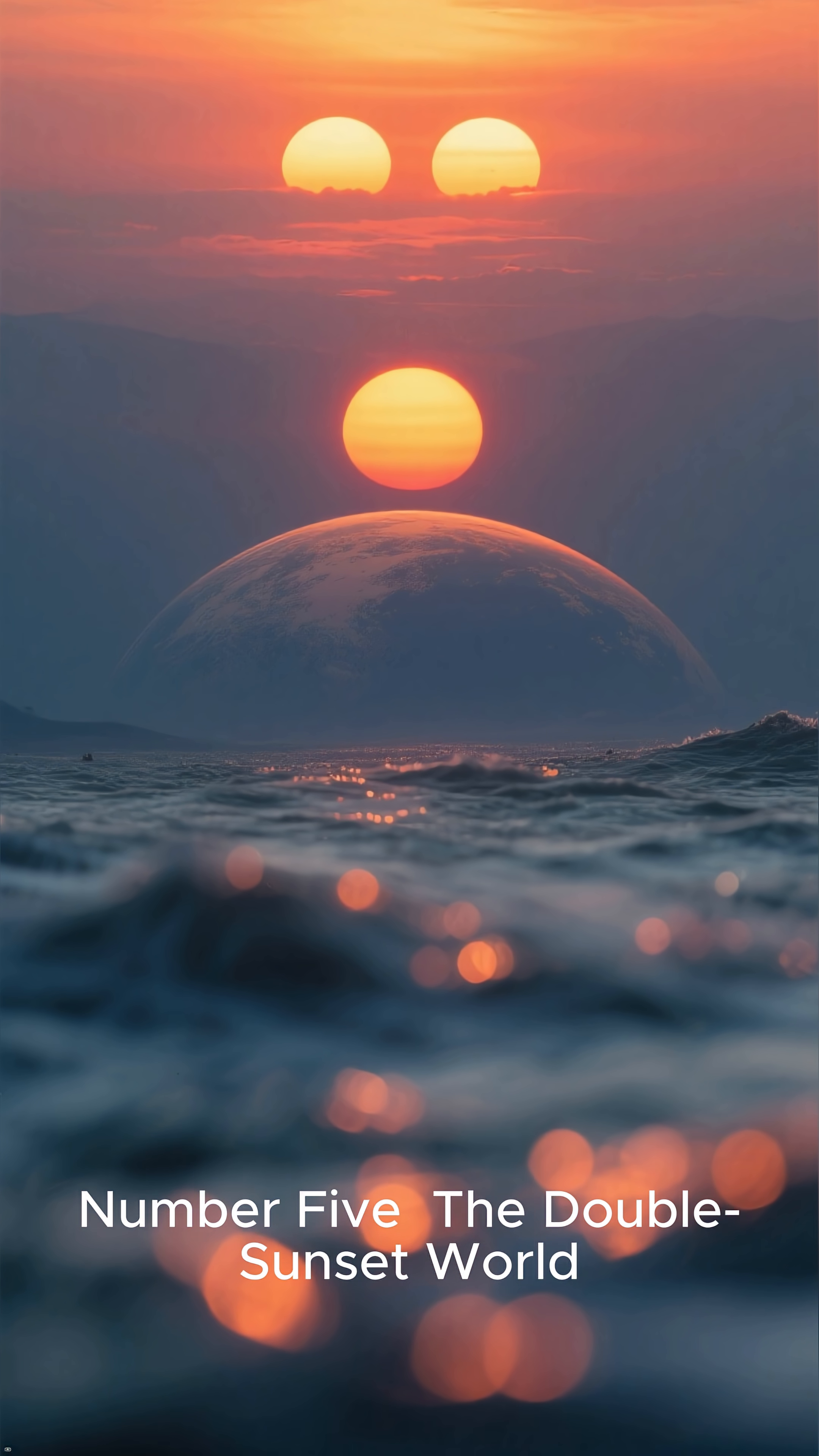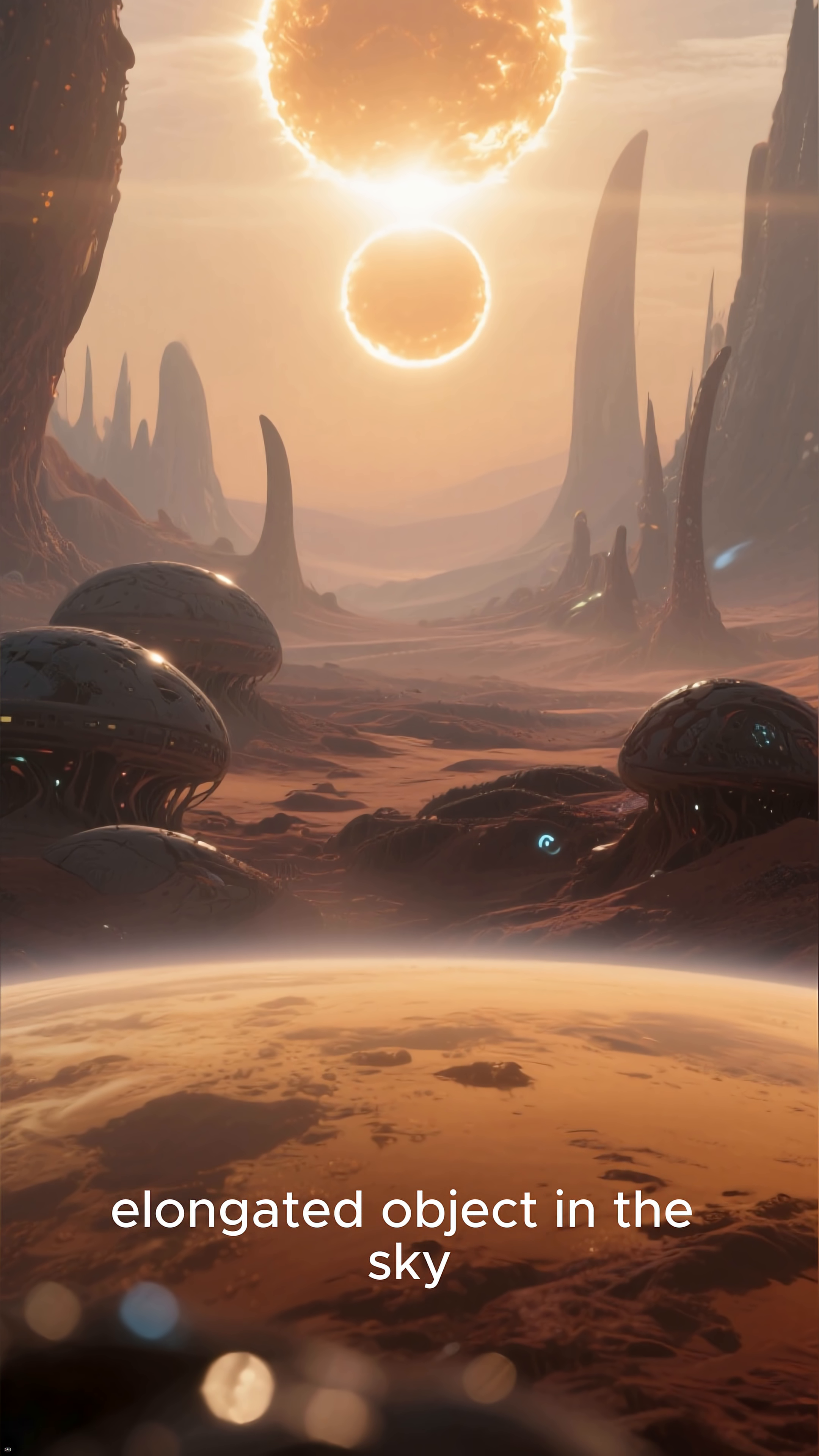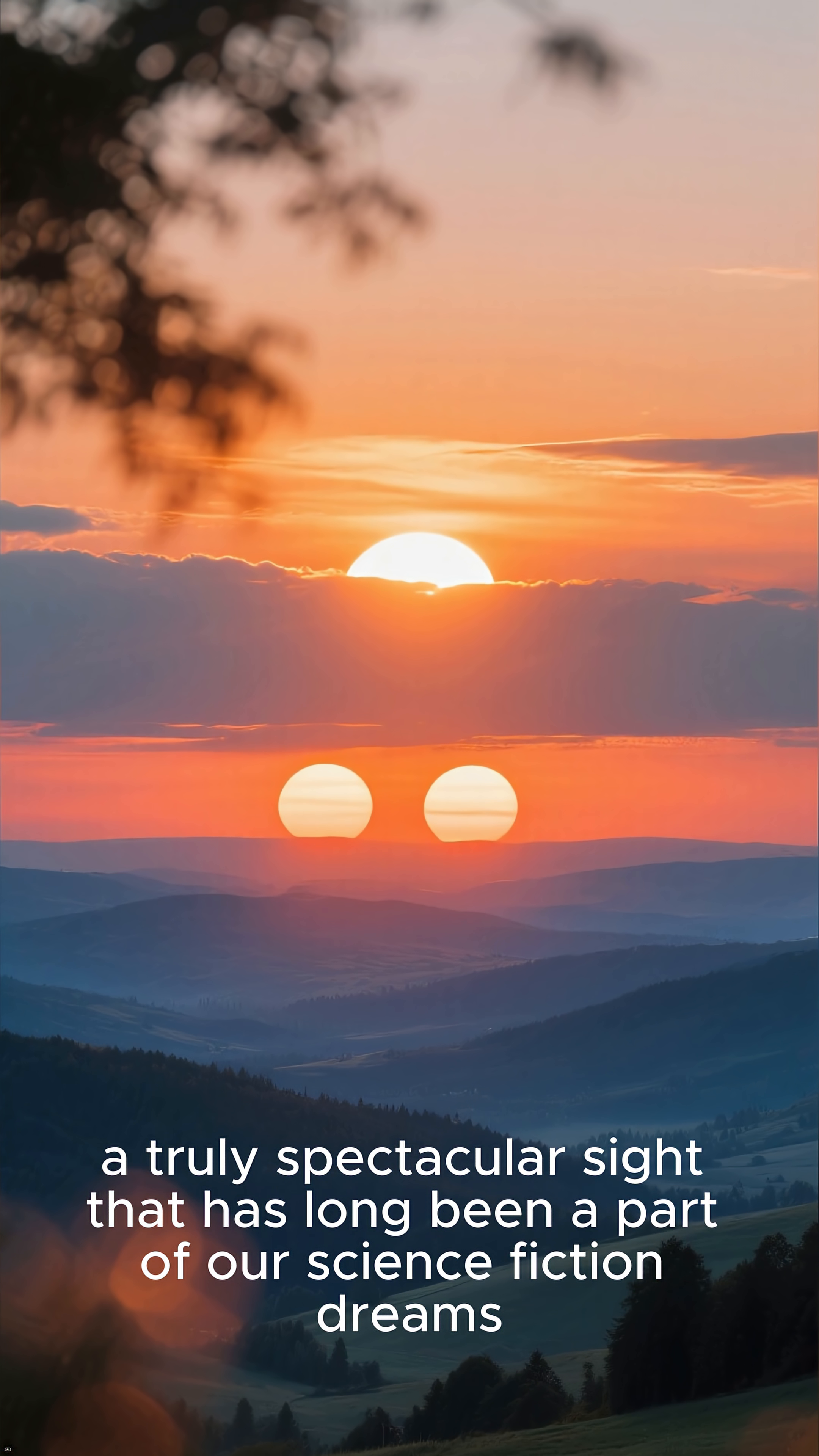Number five, the double sunset world. Our list begins with a planet that orbits a pair of stars that are very close together. From the planet's perspective, they would likely appear as a single elongated object in the sky. However, as they set, they would create a famous double sunset, a truly spectacular sight that has long been a part of our science fiction dreams.